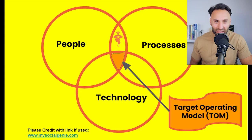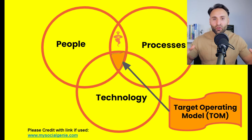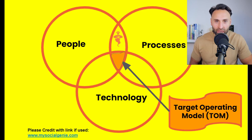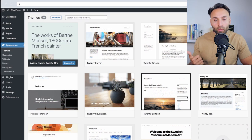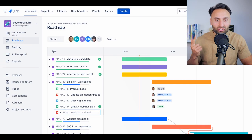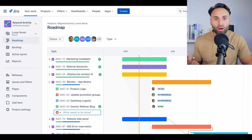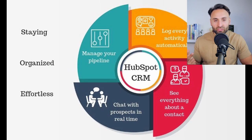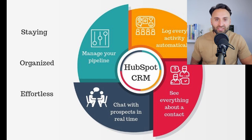Then finally we have technology — the platform which all of this will sit on top of and will actually enable the company to reach their goal. This could be WordPress for publishing, a software development platform such as Atlassian, a marketing platform, or a CRM platform such as HubSpot to monitor all customer data and also publish and schedule social media posts.